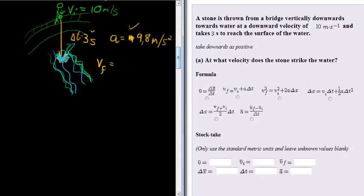Therefore, we have that future velocity is equal to initial velocity plus acceleration times delta T. Where initial velocity we have as 10 meters per second, acceleration as positive 9.8 meters per second squared, and time is then 3 seconds.